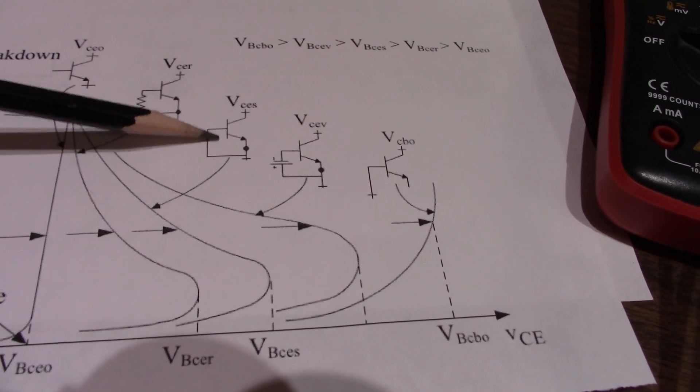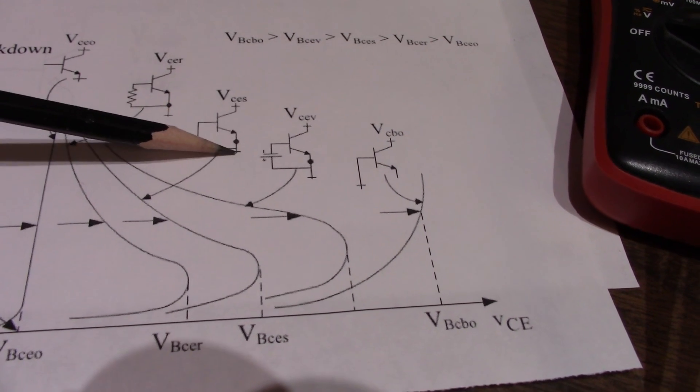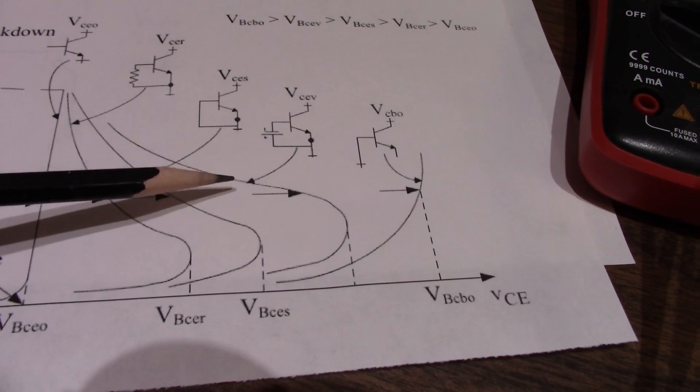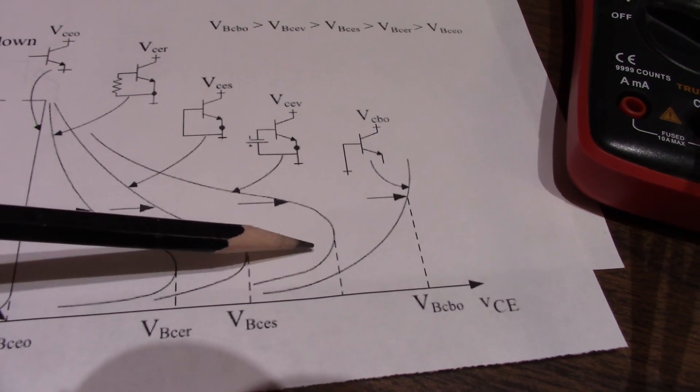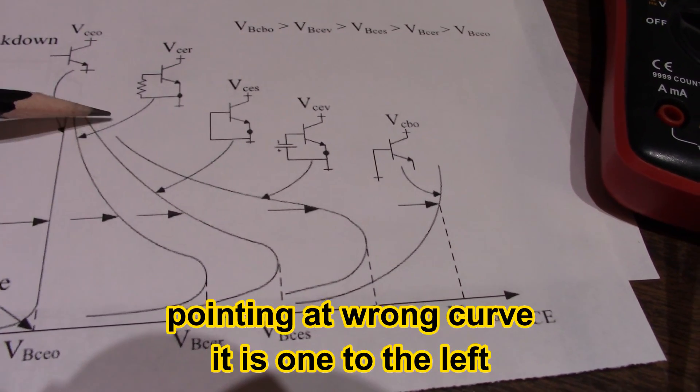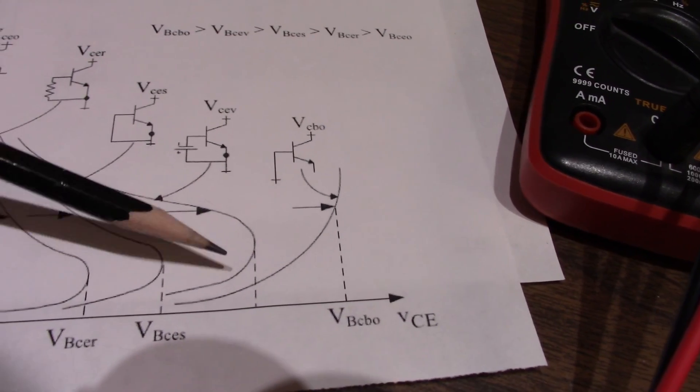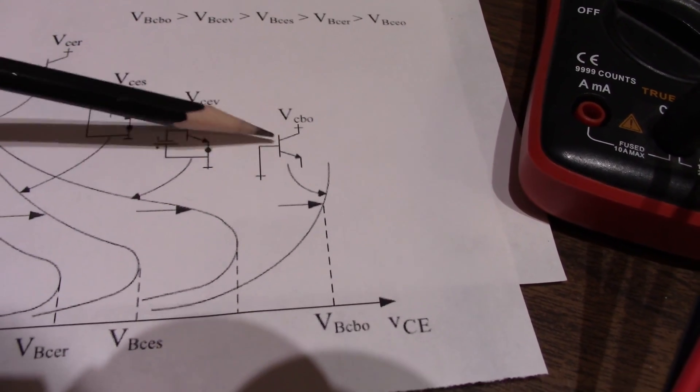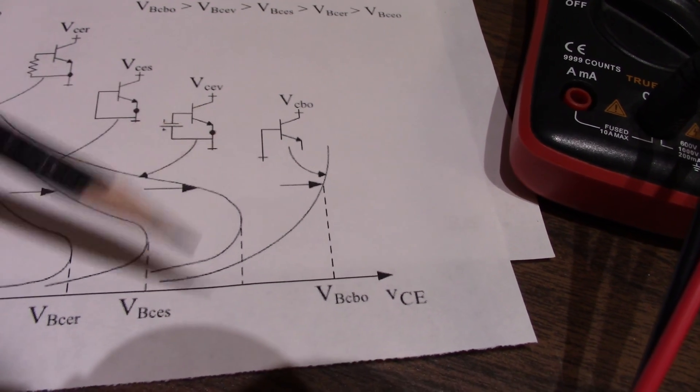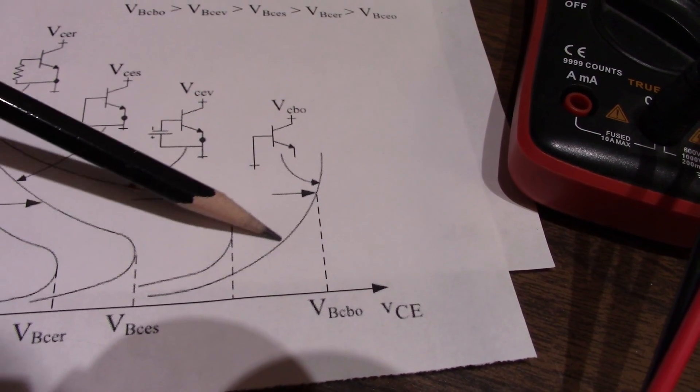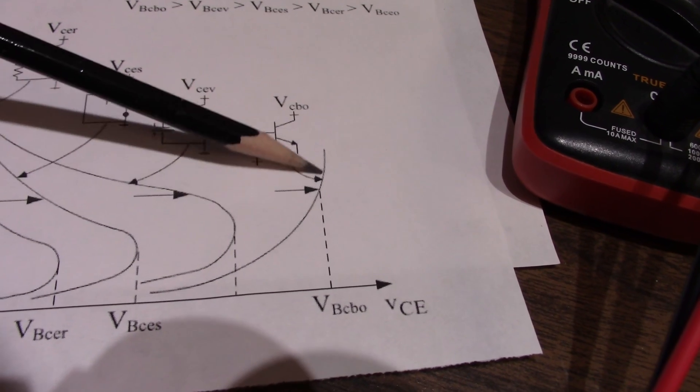And what we did here is when we shorted the base emitter together, you see this breakdown voltage goes even higher still. And another condition is when you connect the base to ground, which we did also, is you can see the breakdown voltage is the highest.